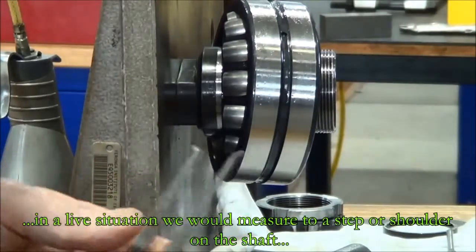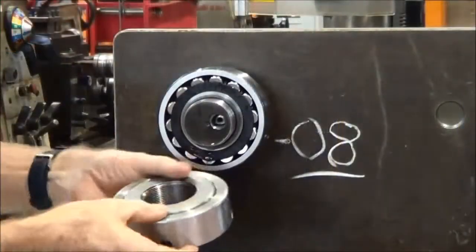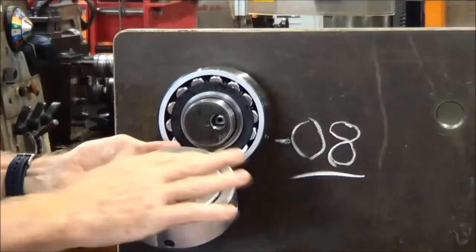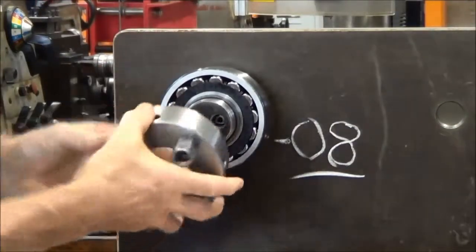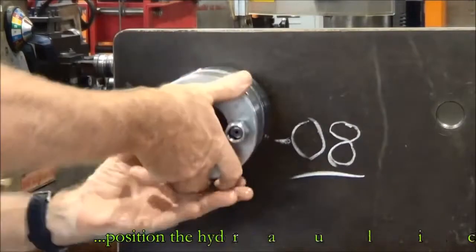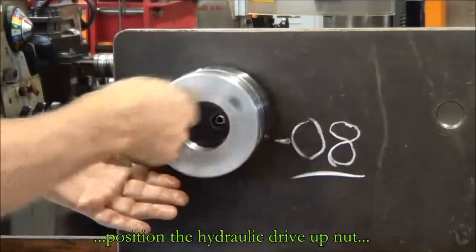Once we've got the dimension, we write it down. Here we're going to use a hydraulic drive nut. The internal section screws onto the shaft, up onto the bearing.